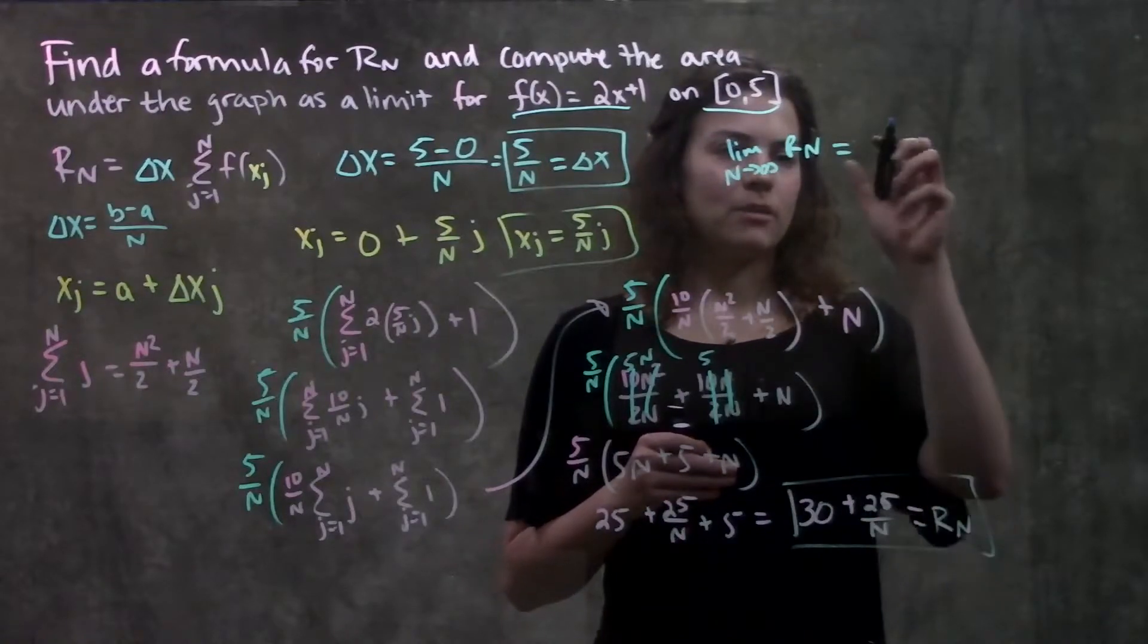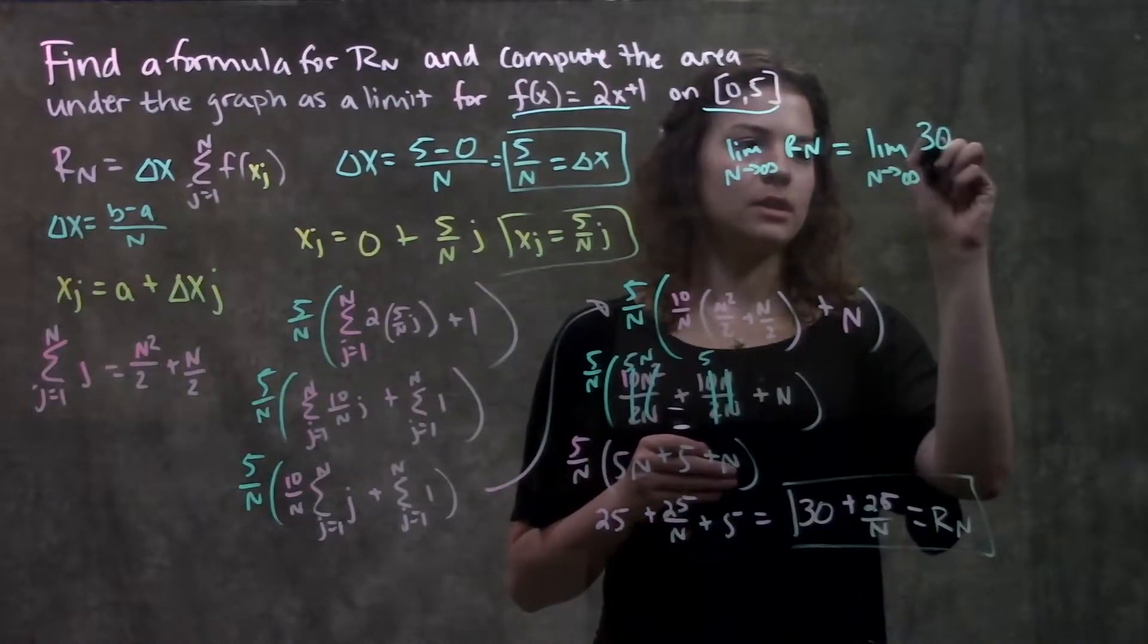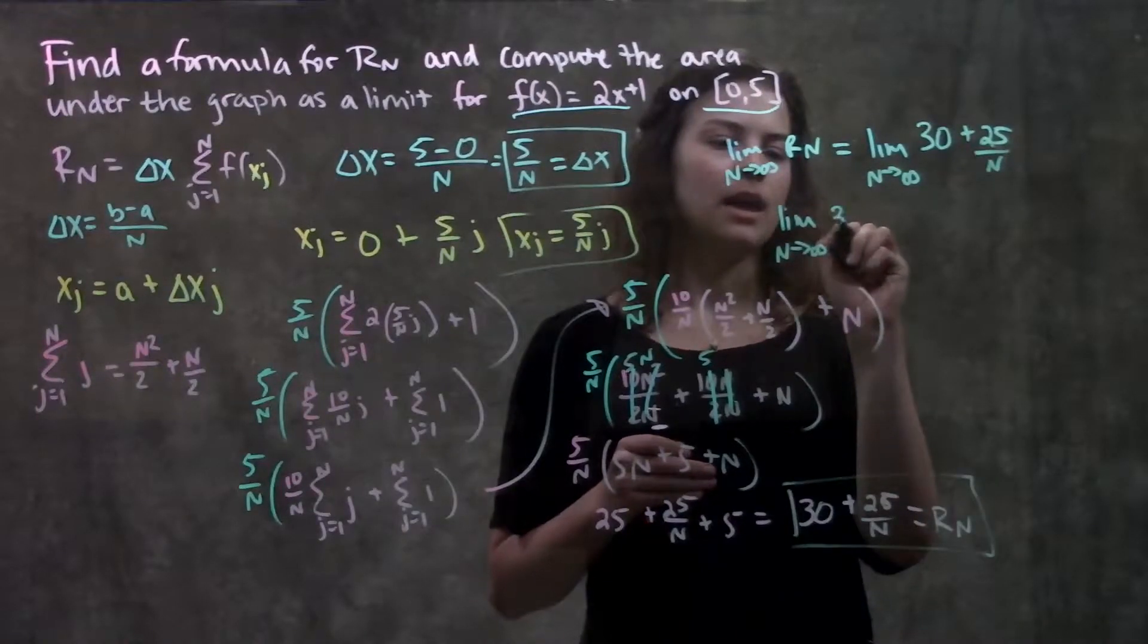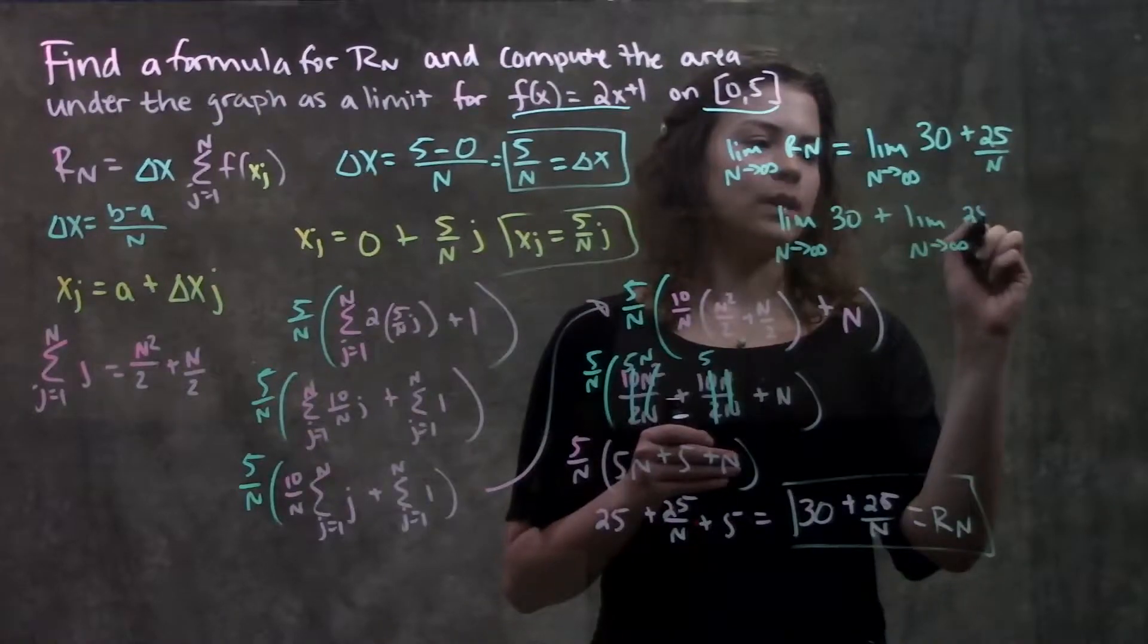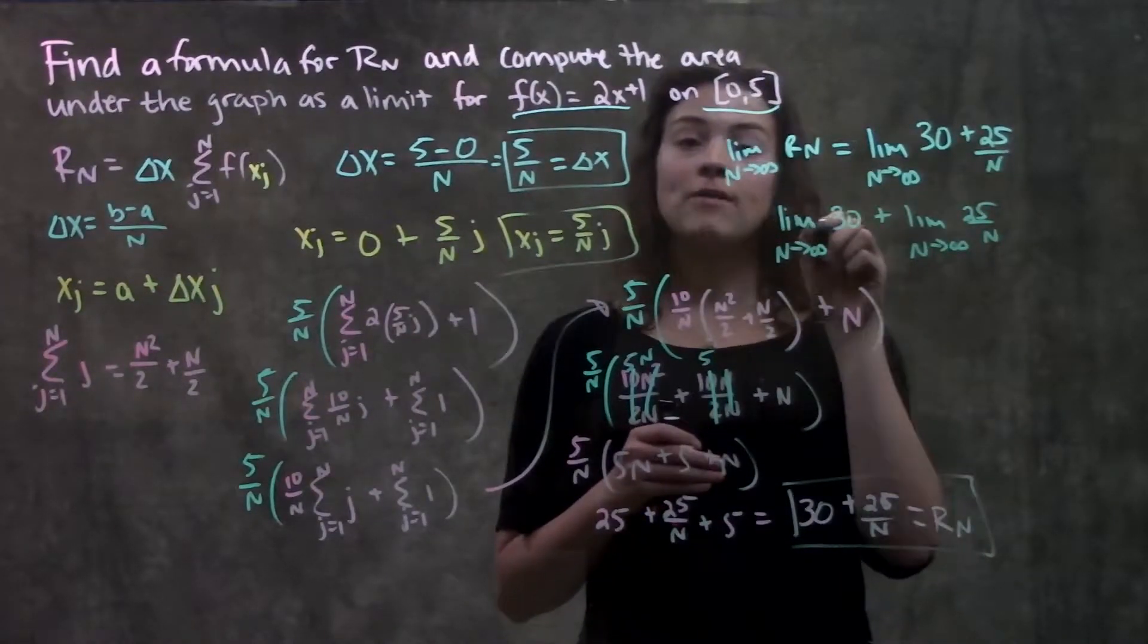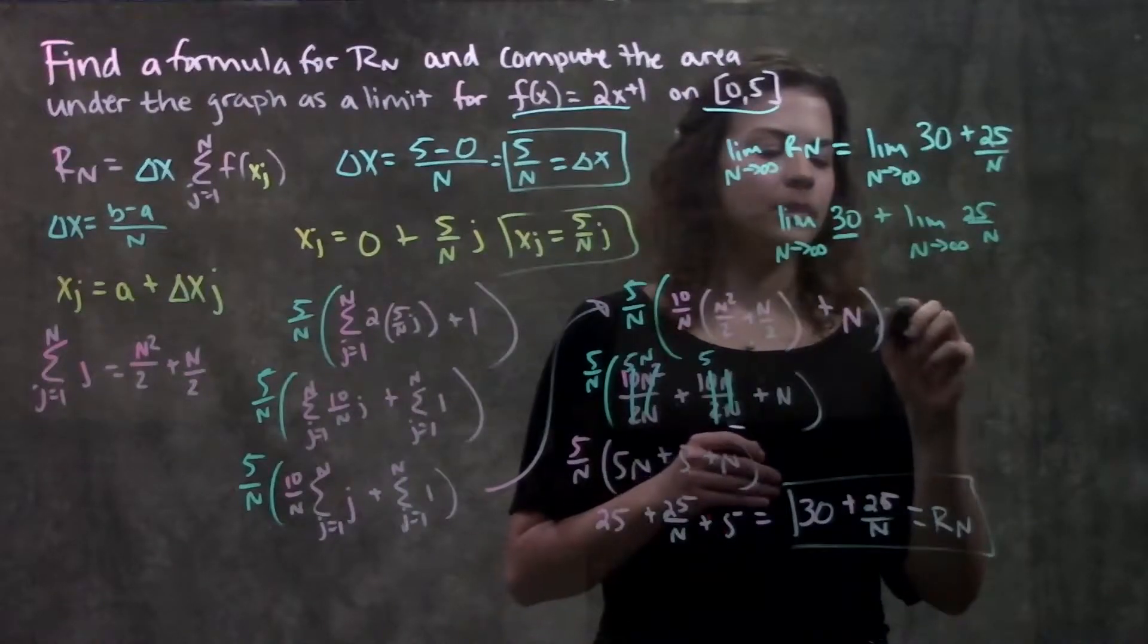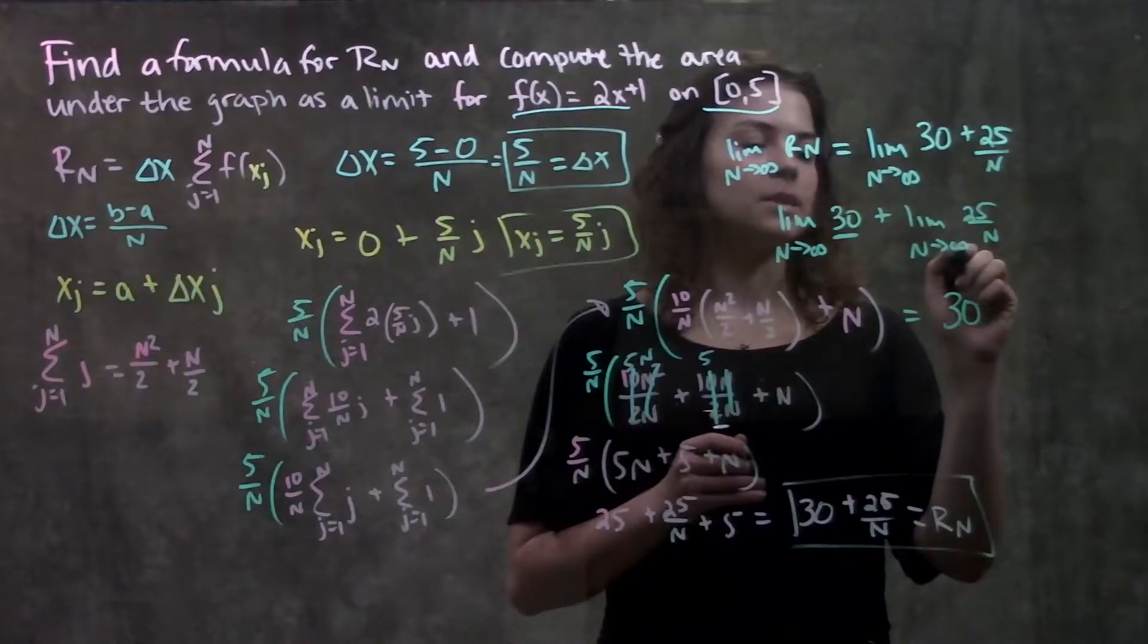So, we just plug in our formula, we have the limit as n approaches infinity of 30 plus 25 over n. We can go ahead and split this up, so it becomes limit as n approaches infinity of 30, plus the same limit of 25 over n. For this part here, remember, whenever you have a constant of any limit, whatever this variable is approaching, the value is always just that limit. So, now I have 30 plus the limit as n approaches infinity, 25 over n.